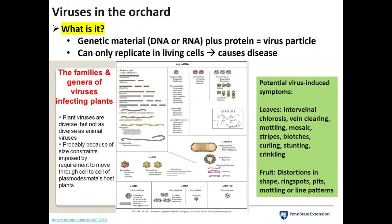With fruit, it can be distorted in shape, much smaller, with ring spots, pits, mottling, or line patterns. Plant viruses are named in a very straightforward way: the host it's found in, the symptom it causes, and the word virus attached. So apple mosaic virus was found in apple and creates a mosaic pattern. That's how viruses are named.